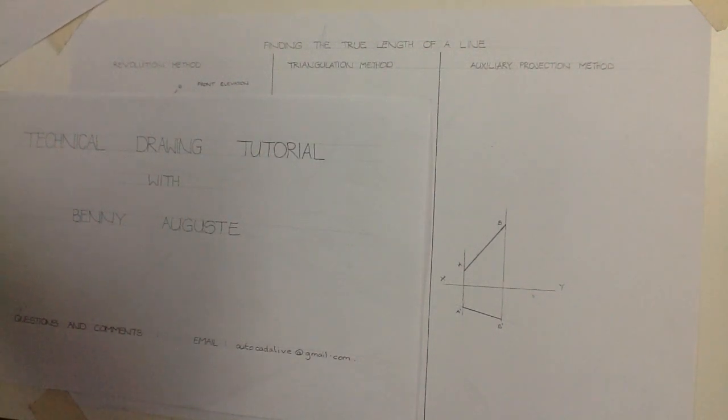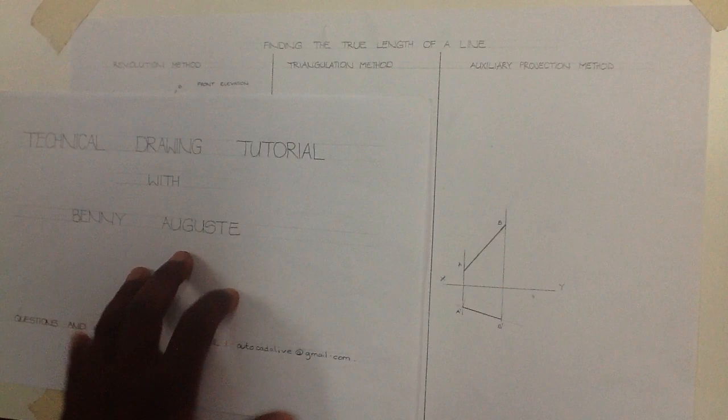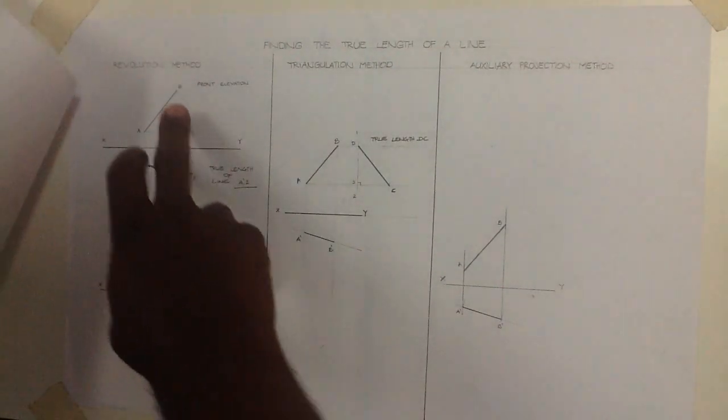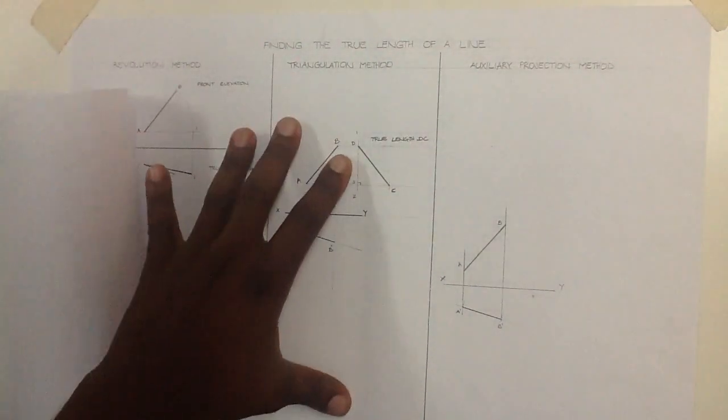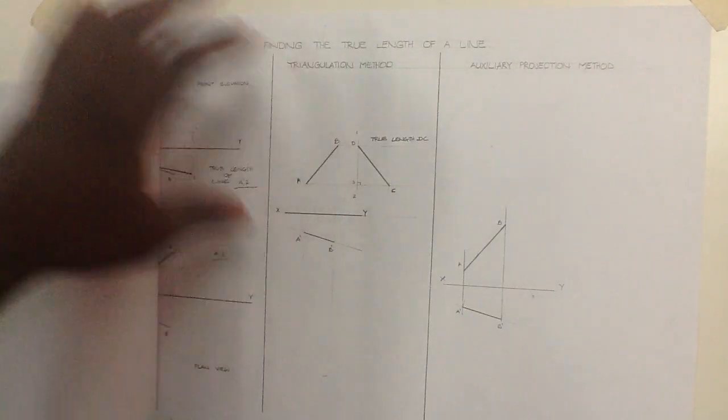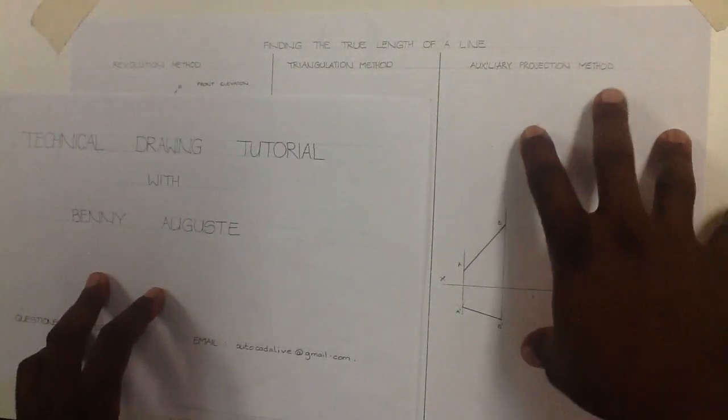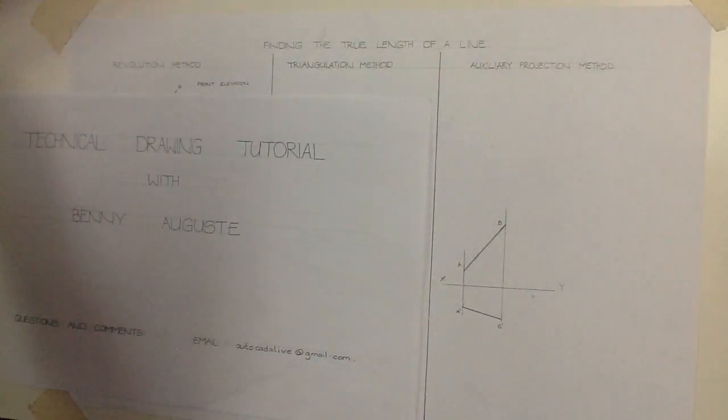Hey good day guys, welcome to the final of all three tutorial videos that dealt with finding the true length of a line. In the first video we looked at the revolutionary method, the second tutorial video we looked at the triangulation method, and now the auxiliary projection method.